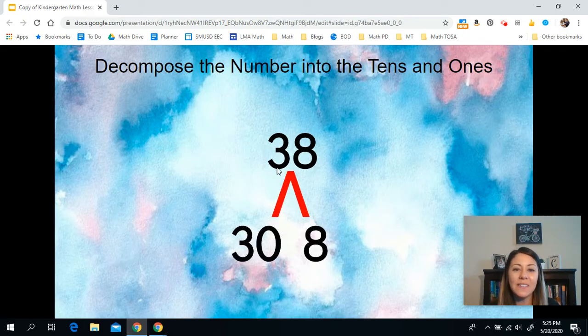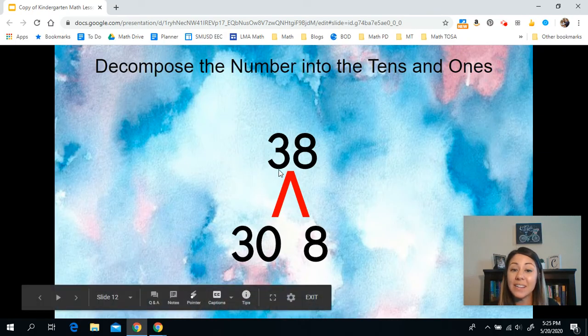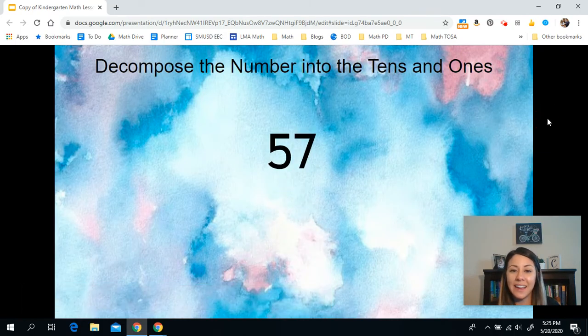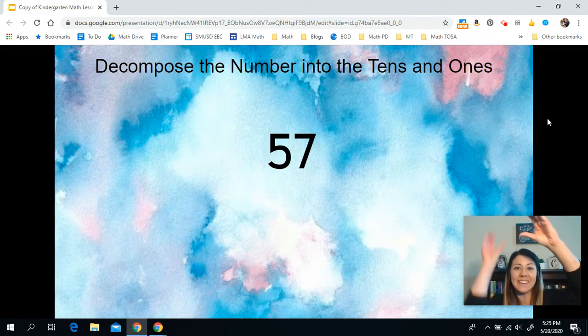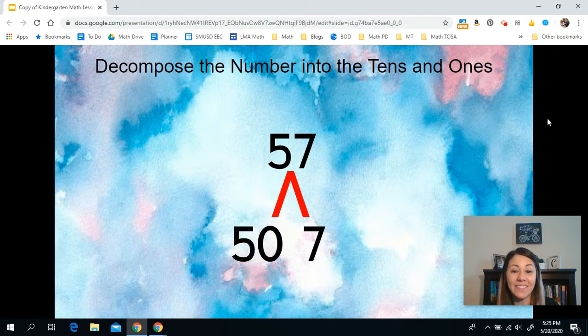Our three becomes a 30 because it's in the tens place. All right. Here's another one. Put your hands up. 57, 50, and seven. And there it is. 50 and seven.